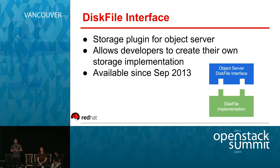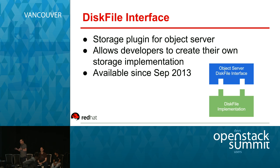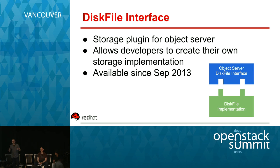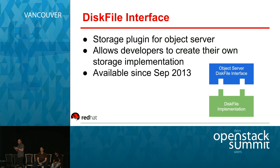A few companies started using it. But then the problem was that the entire Swift cluster had to use the same disk file — we couldn't segregate. Maybe we want to put some data objects in one type of storage system. So we needed something else.